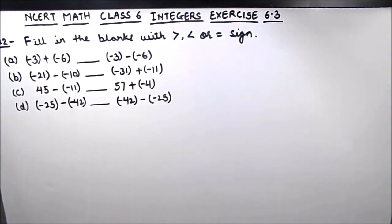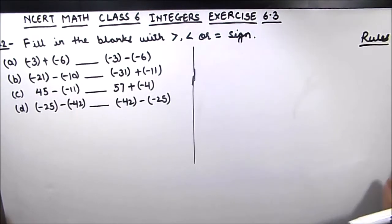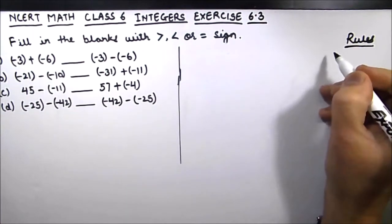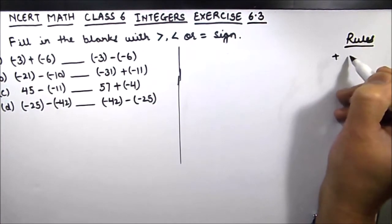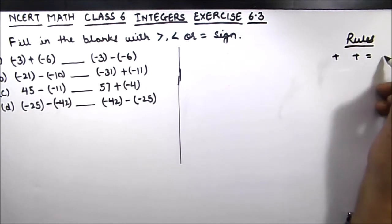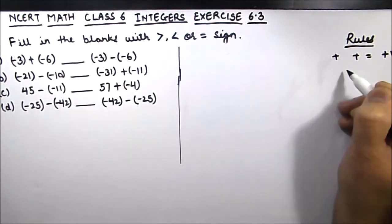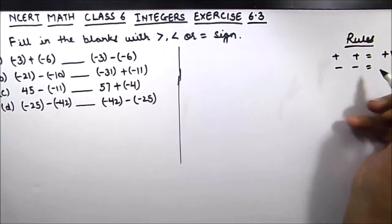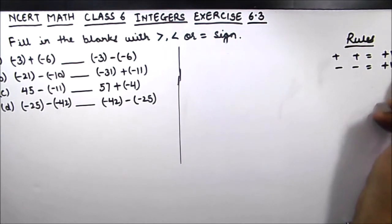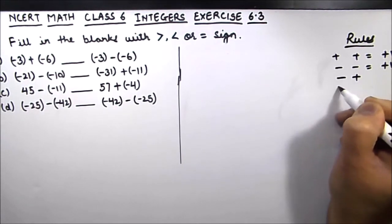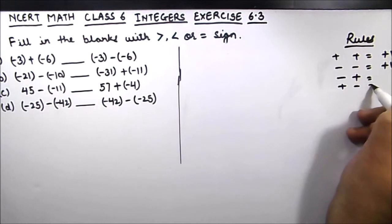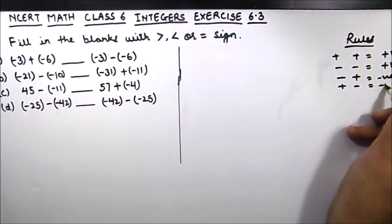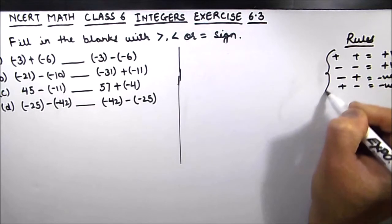Hello everyone. In this video we are going to solve question 2 of class 6th chapter integers exercise 6.3. Let us first write the rules for integers. We have four basic rules: when two signs are both plus, we get a positive sign; when two signs are both negative, we also get a positive sign; and when one sign is positive and one is negative, we get a negative sign.